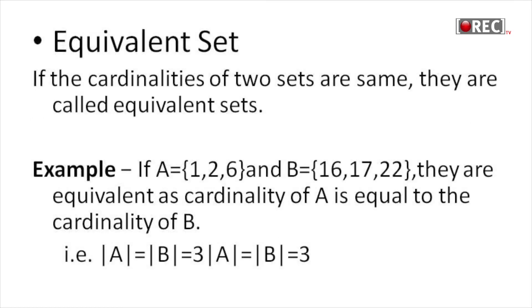Equivalent set: Two sets with the same cardinality are called equivalent sets. For example, A equals 1, 2, 6 and B equals 16, 17, 22. A has three elements and B has three elements. They are equivalent because the cardinality of A equals the cardinality of B. Three is the common element count.